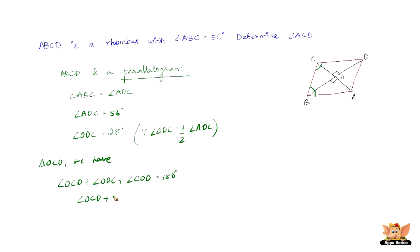Angle OCD plus 28 degrees plus 90 degrees equals 180 degrees. Because we know that this is a right angle and this is 28 degrees. So now angle OCD equals 180 degrees minus 90 degrees minus 28 degrees. Therefore you get angle OCD as 62 degrees.